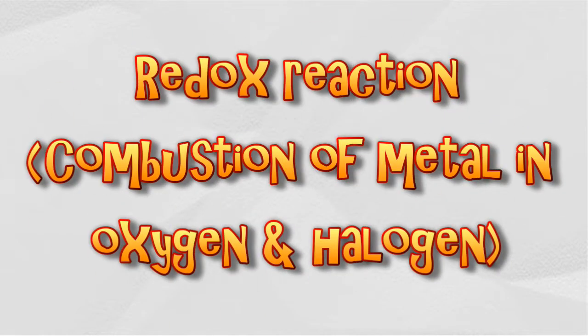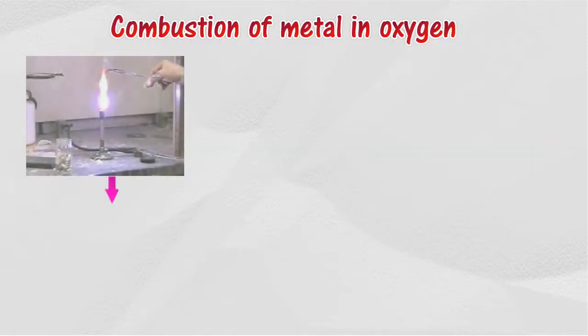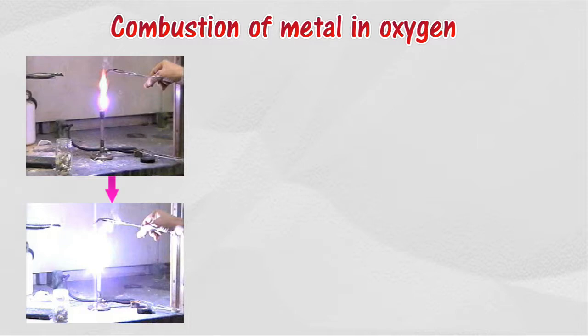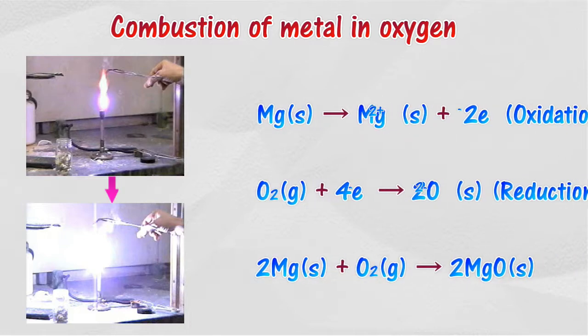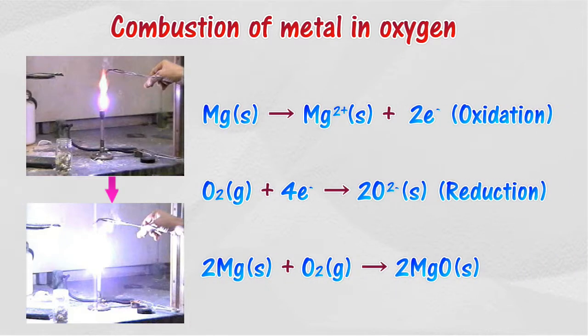Redox reaction involving the combustion of metal in oxygen: metals like magnesium burn in oxygen to form metal oxide when heated strongly. In this reaction, oxygen oxidizes magnesium to magnesium ion. At the same time, magnesium reduces oxygen to oxide ion. Magnesium releases electrons to form magnesium ion, and electrons transfer from the magnesium atom to the oxygen atom.